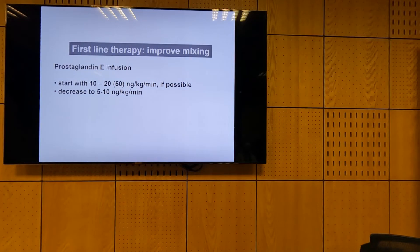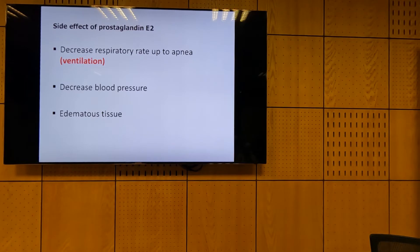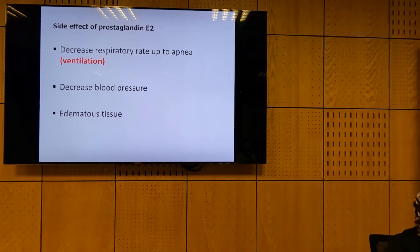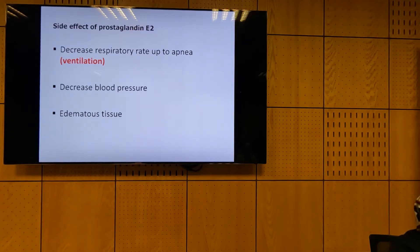First line of therapy: if you see a blue baby, try to improve mixing according to the scenario. In the peripheral area, start prostaglandin infusion at 10 to 20 ng per kg per minute, then decrease the dose because prostaglandin has side effects — it can decrease respiratory rate requiring ventilation, decrease blood pressure, and cause tissue edema. This is a quick and easy option in peripheral settings, but not a stable long-term solution because TGA requires surgical correction and the baby must be transferred to a tertiary center.